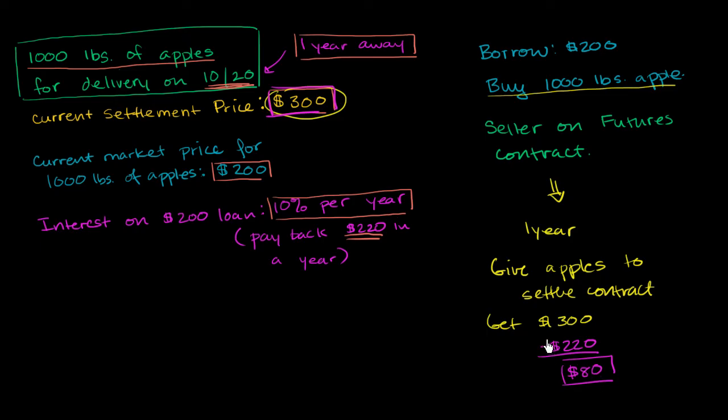So one way to think about futures pricing is even if you think there's going to be a cold snap, and apples are going to disappear, and there's going to be this shortage of apples. And so you might say, hey, maybe the apple prices will go up a year from now. There's always going to be a way to arbitrage it if the settlement price, if the growth in price is more than the cost of borrowing the same amount of money, the cost of borrowing $200.